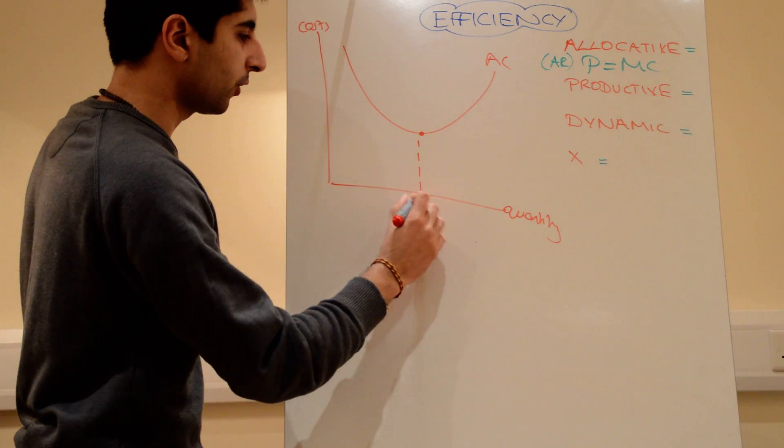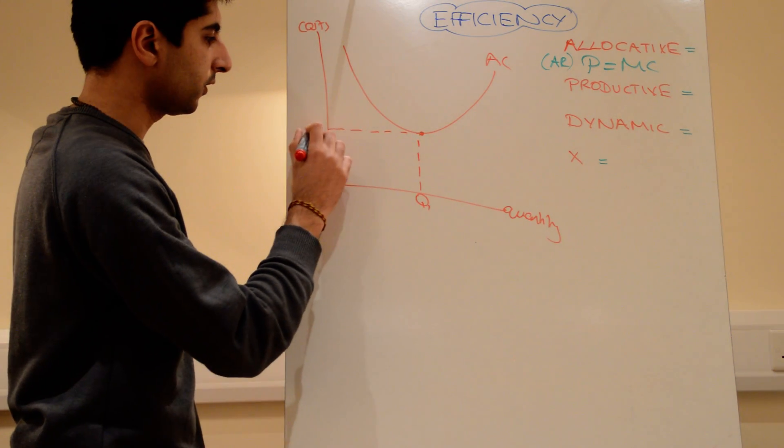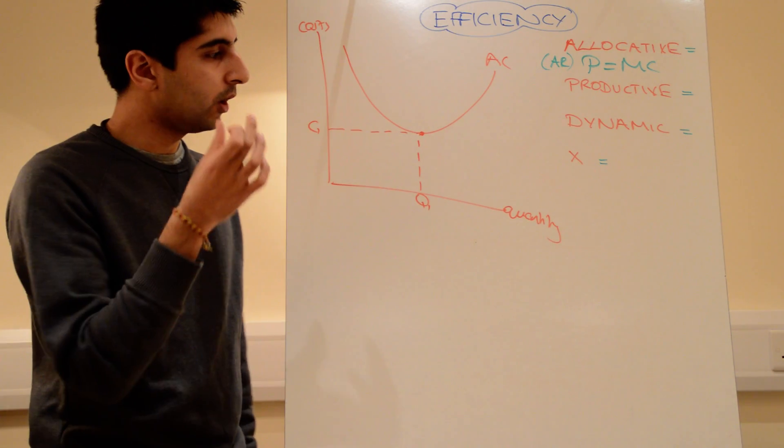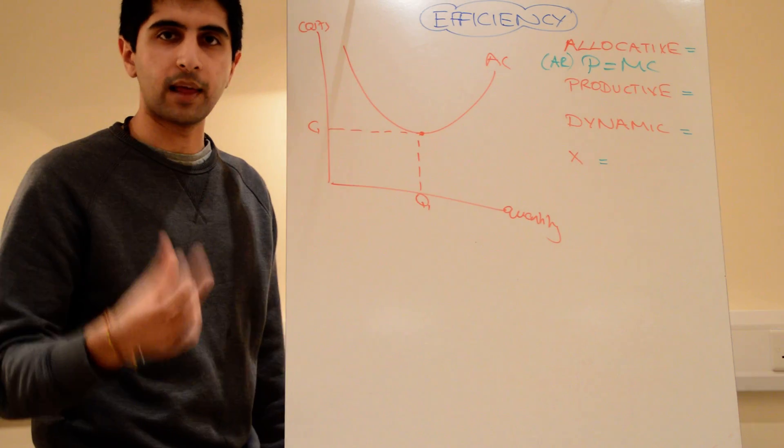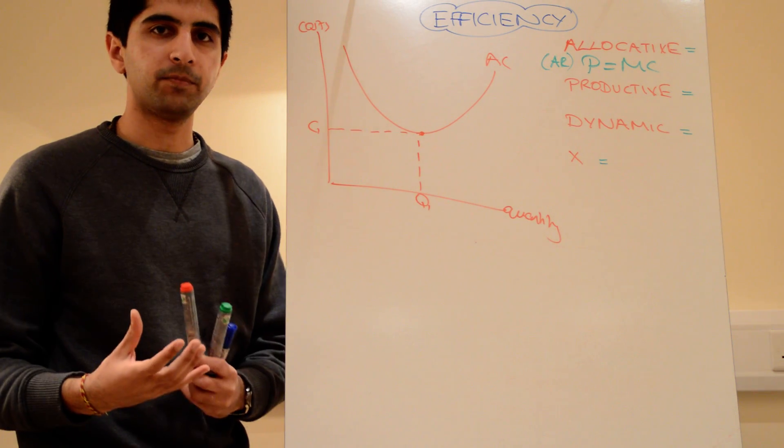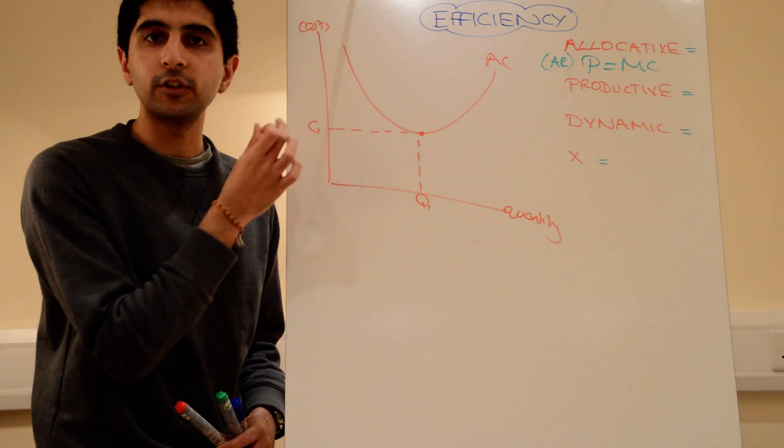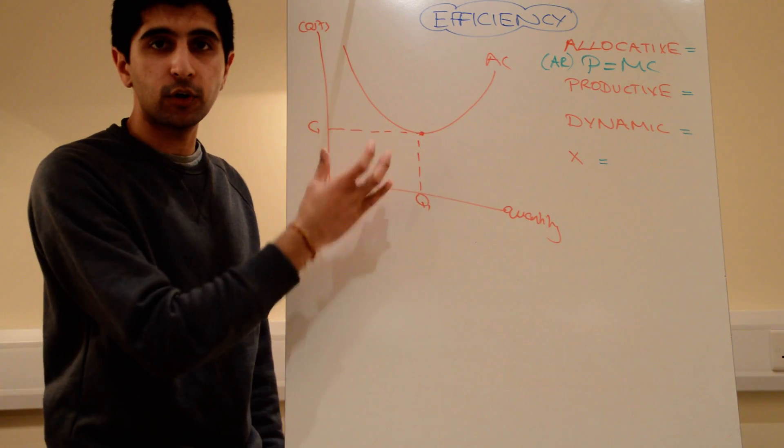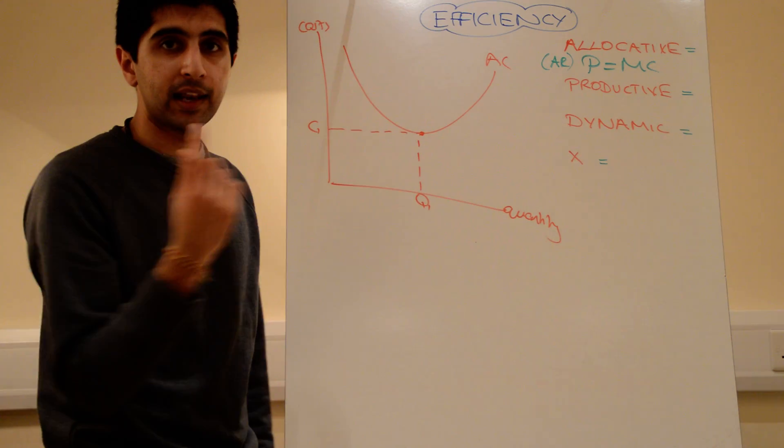At that level of quantity, we are minimizing costs and producing the maximum possible we can at that minimum cost level. So, the firm is exploiting all available economies of scale. In doing so, it's producing to the max amount at the lowest possible cost. That's very efficient for the firm, minimizing costs but maximizing production at that level of cost.